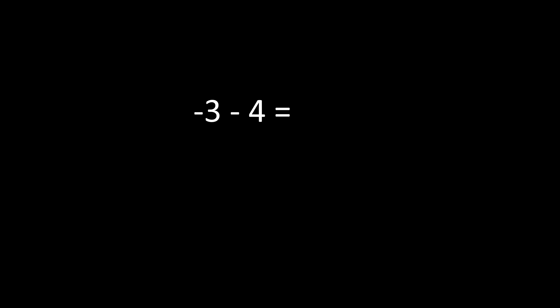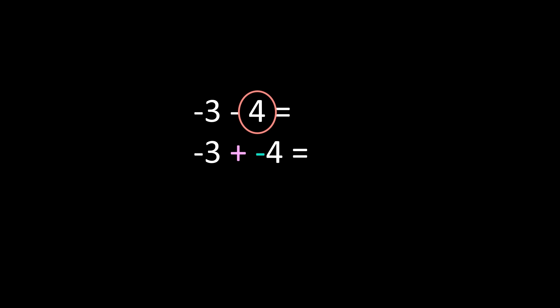So what are those steps? We take the first integer and keep it exactly the same, so the negative 3 remains negative 3. Then our subtraction sign we change to addition. And then we change the sign of our second integer, so the positive 4 becomes a negative 4. Now you can see that we're adding two negative integers, and that's why you could think about this as adding integers. When subtracting, you change the subtraction sign to addition and change the sign of your second integer.